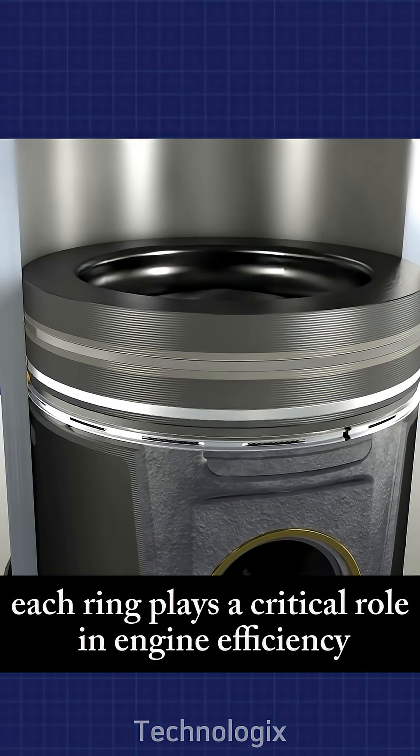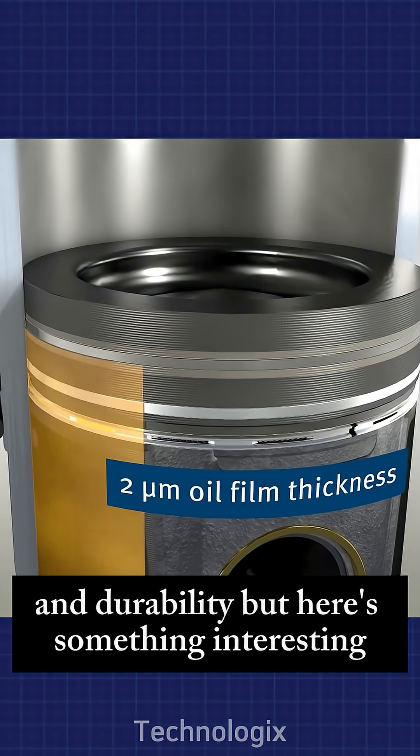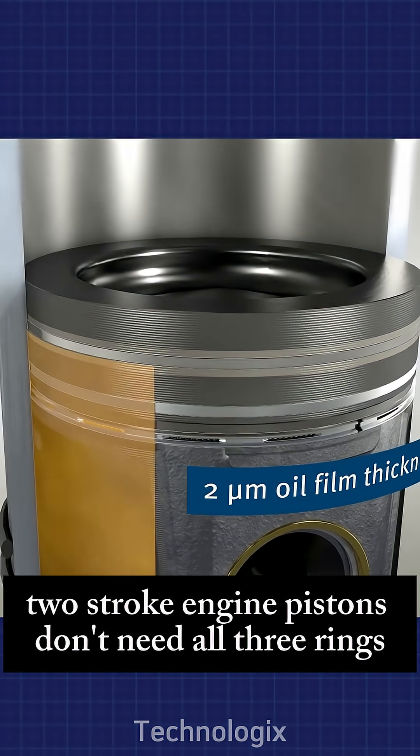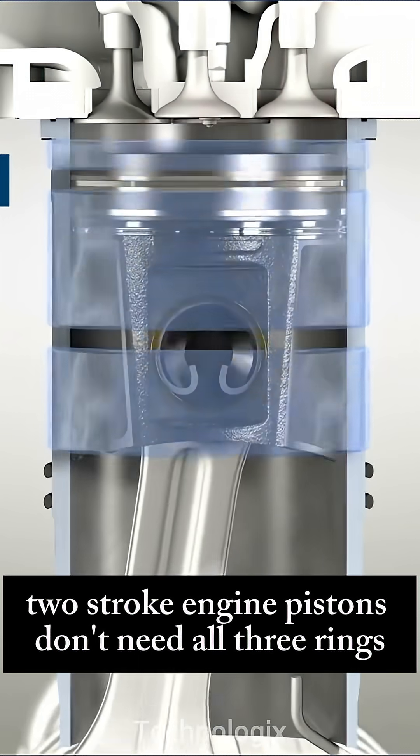Each ring plays a critical role in engine efficiency and durability. But here's something interesting. Two-stroke engine pistons don't need all three rings. One of them is missing.